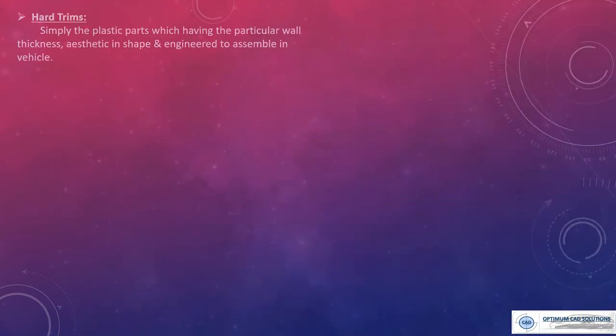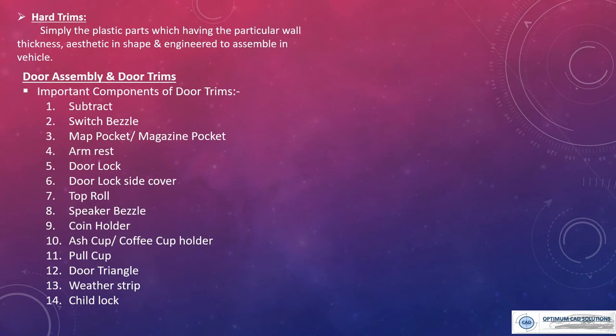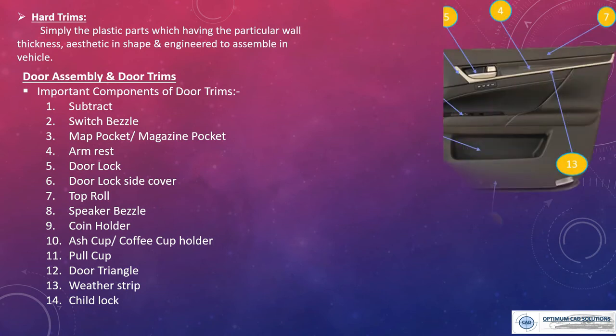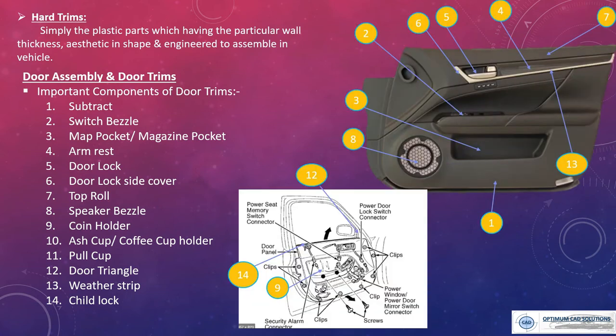Next is the hard trim. Simply, a plastic part that has a particular wall thickness, an aesthetic shape, and is engineered to assemble in the vehicle is called a hard trim. Simply, all interior plastic parts are an example of a hard trim.